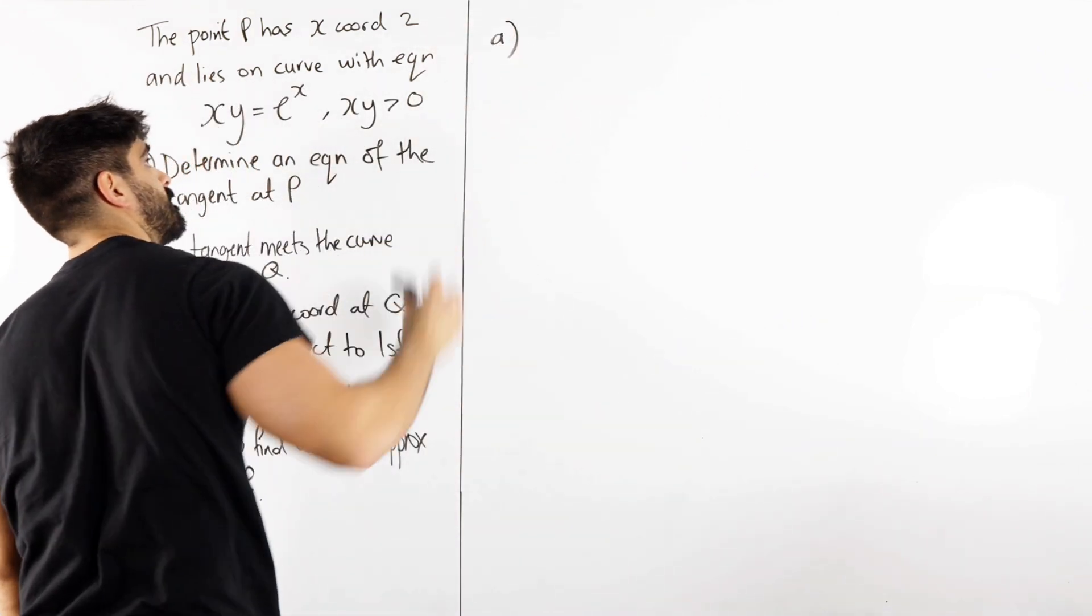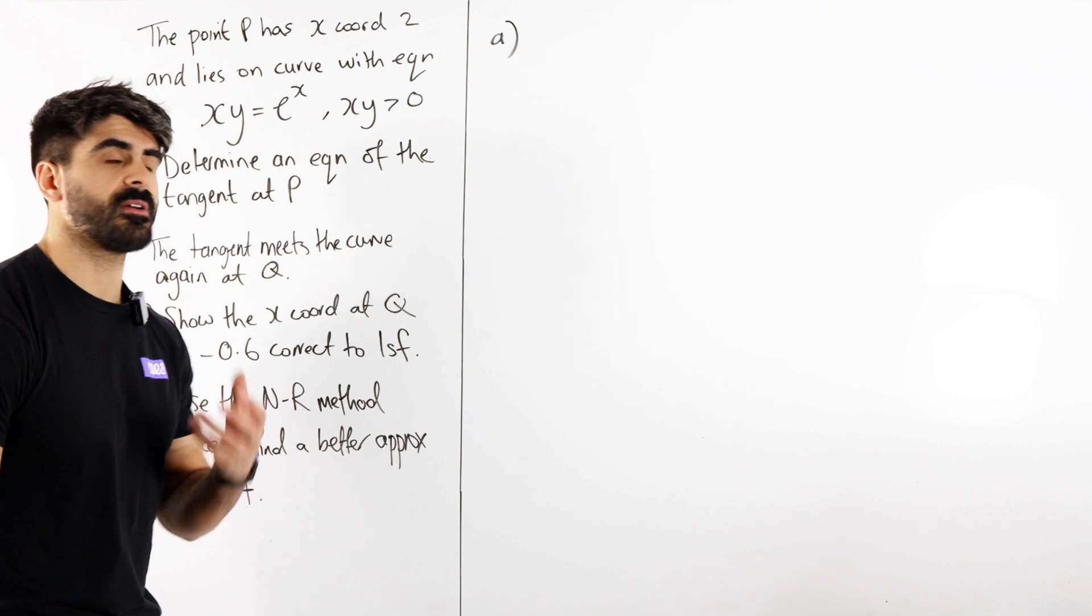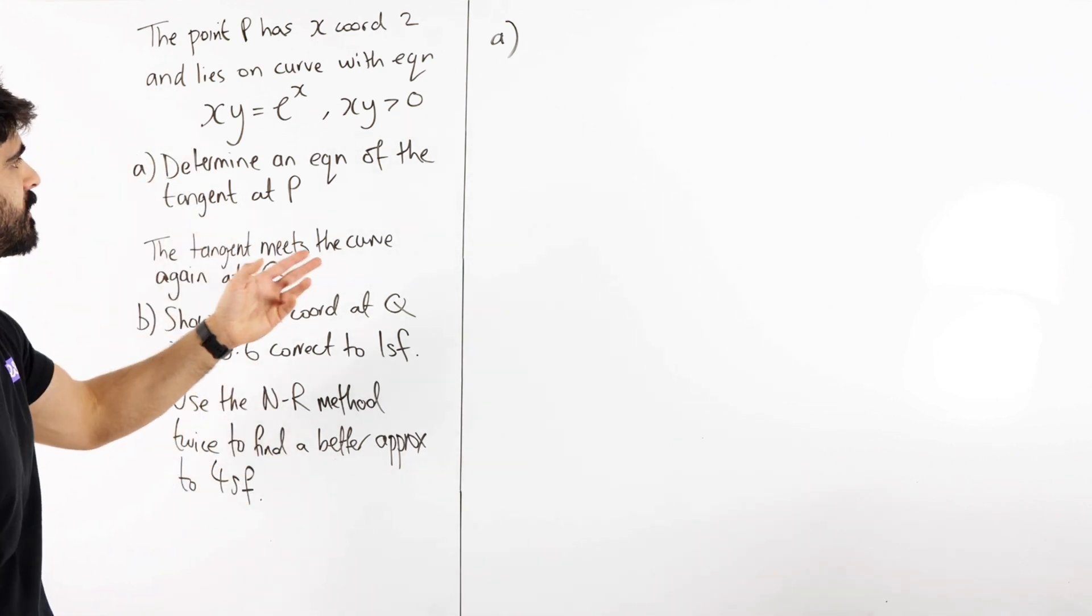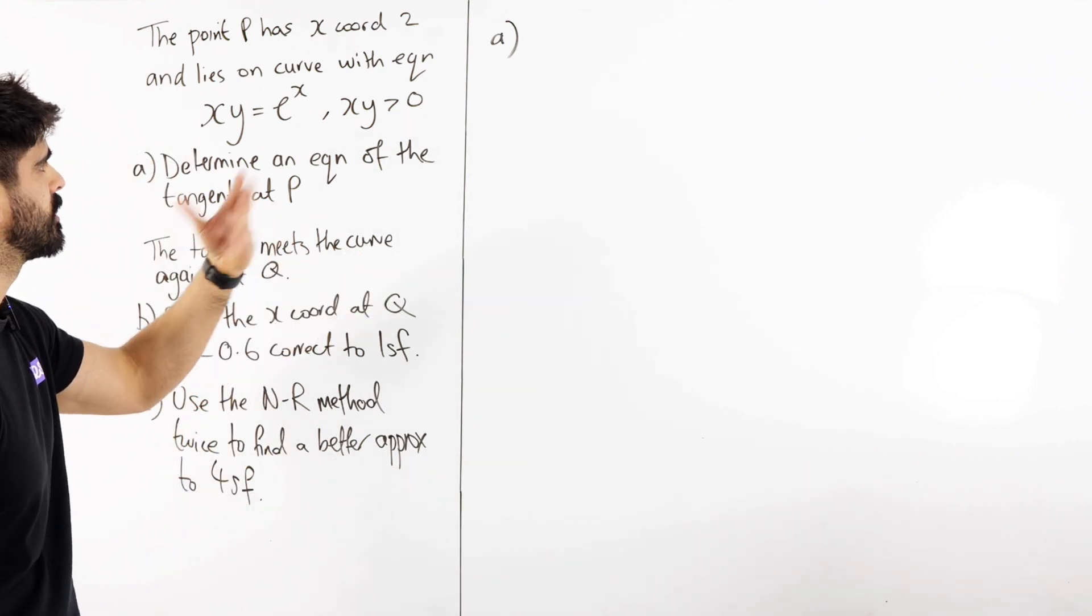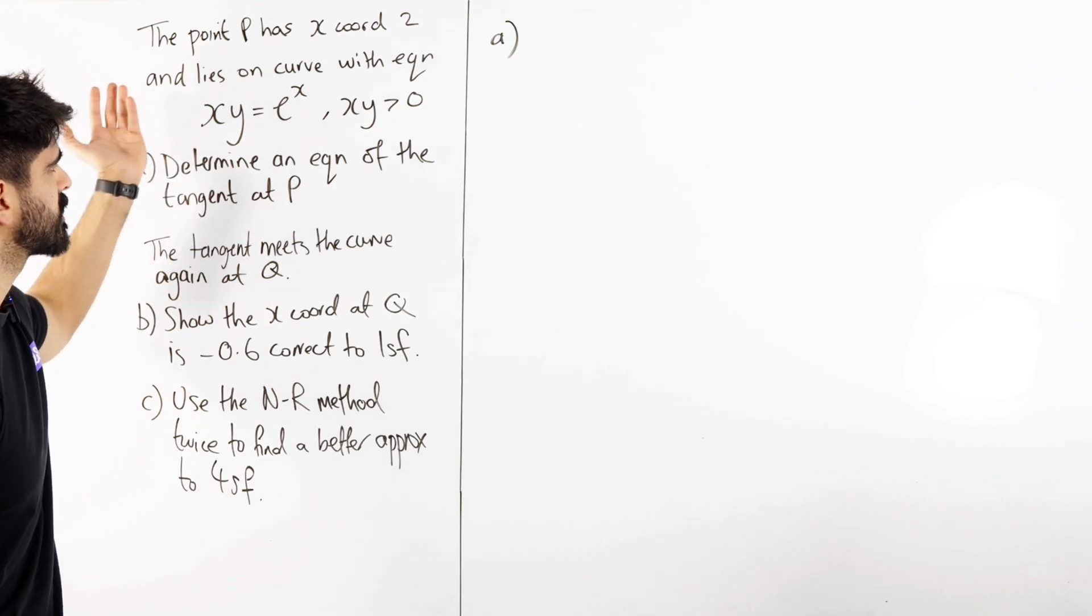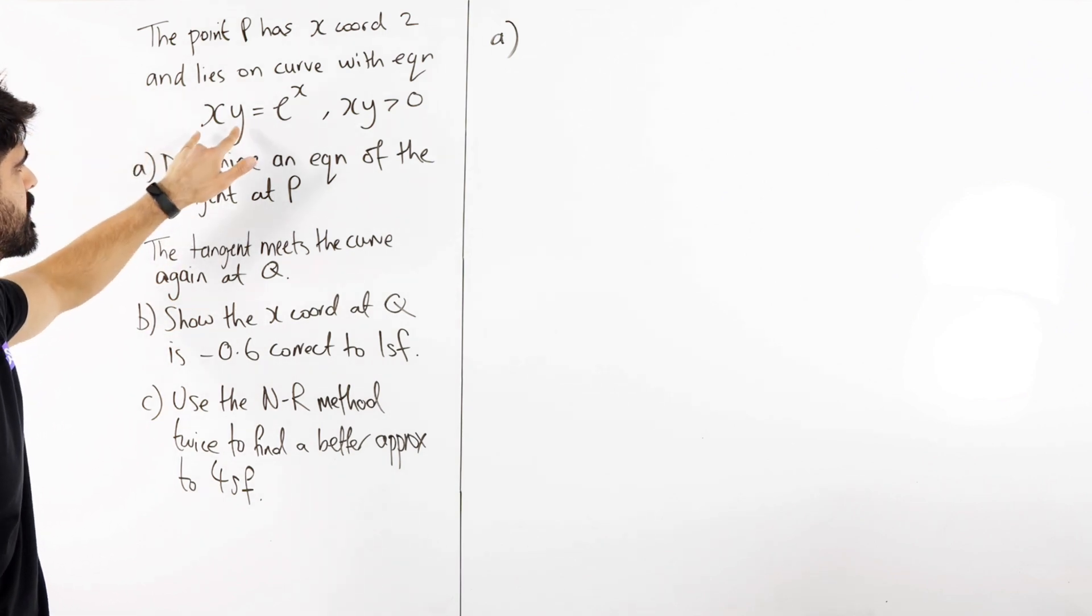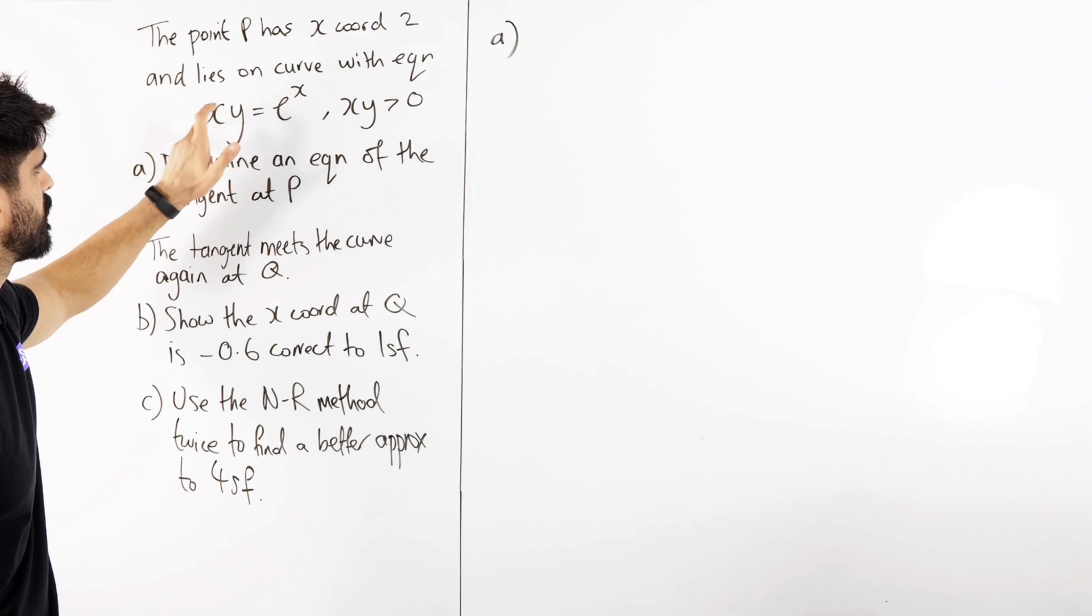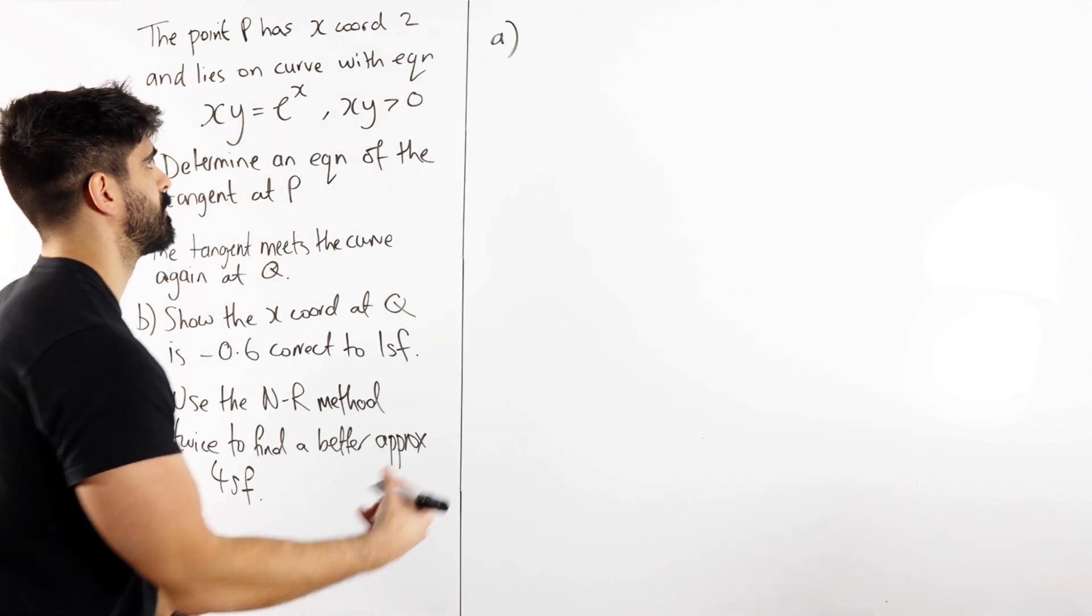All right, tangent. I don't even need to draw a diagram this time, we're just going to go straight into finding the gradient and then just do y minus y1. So how do you find the gradient here? Well this looks like implicit differentiation to me because we have x and y mixed up, so they're two functions, we can just do implicit differentiation.